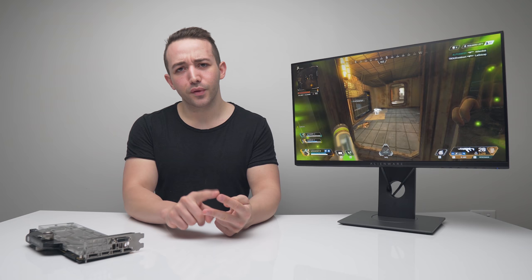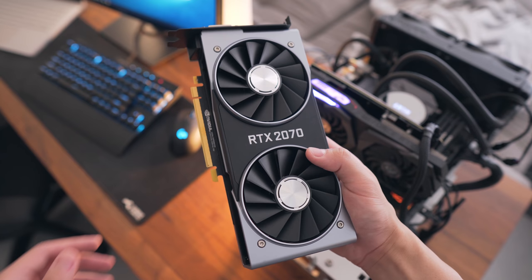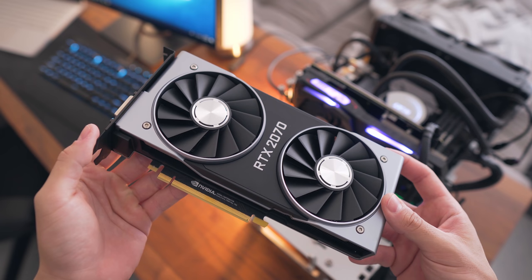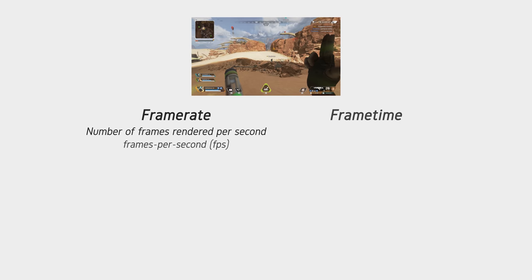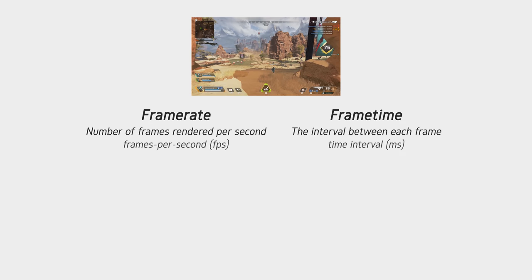A quick primer on two very important terms I'll be mentioning a lot: frame rate and frame time. They're both related and both express how smooth a given gameplay experience is. Frame rate is the amount of frames that the GPU is rendering per second to the monitor. Frame time is the interval between each of those frames, usually expressed in milliseconds. So 60 frames per second means you're receiving one frame every 16.7 milliseconds.